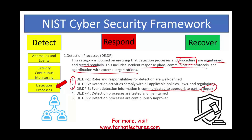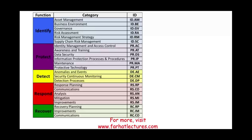This is the detect function, with its three categories and many subcategories. After detecting an event, the next step is to respond, and in the next session we will look at how you respond — the various categories and subcategories under the response function. Go to Farhat Lectures for additional resources and MCQs, whether you're studying for your CPA, CMA exam, or any other professional certification. Invest in yourself. Invest in your career. Good luck and stay safe.